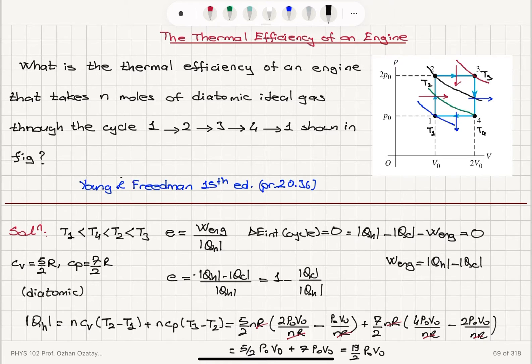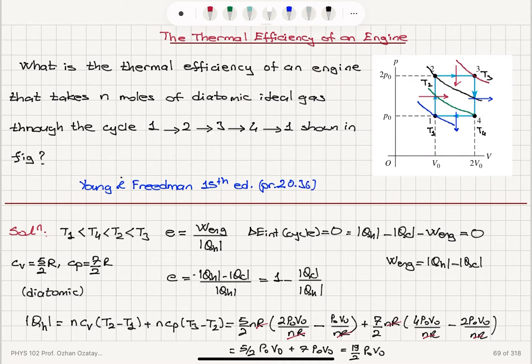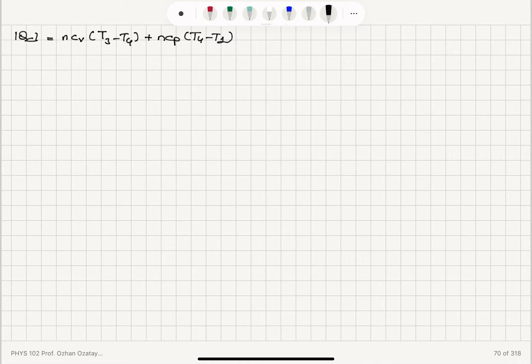For QC, the amount of heat being released, I have between 3 and 4, a constant volume process, and Cv, it would be T4 minus T3, but I have absolute value, so it will be T3 minus T4. And then, I have a constant pressure process, and Cp, T4 minus T1. I write the higher temperature first to get the absolute value. It's normally T1 minus T4, which will give me negative heat added.